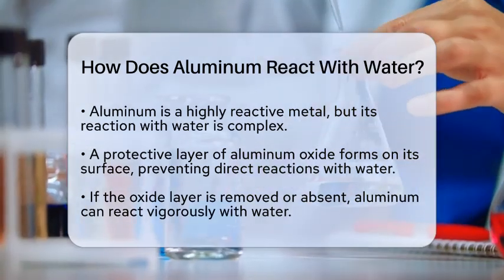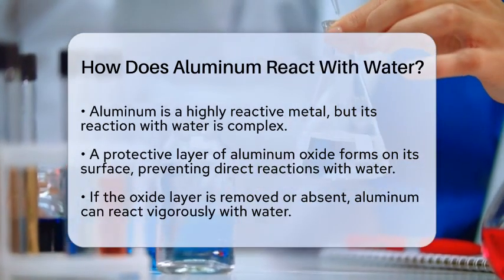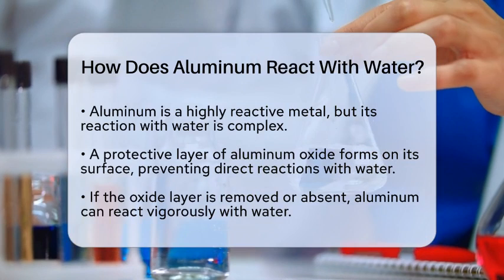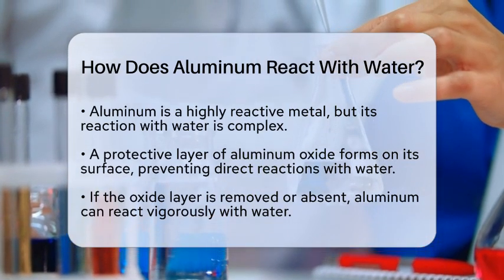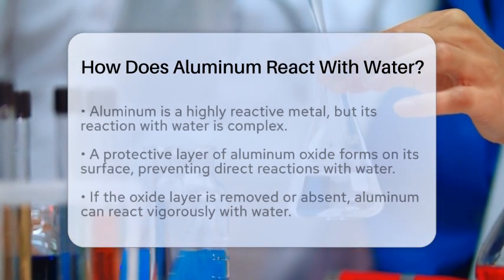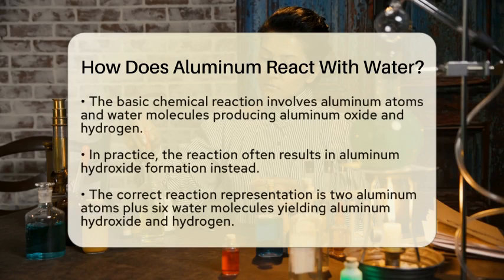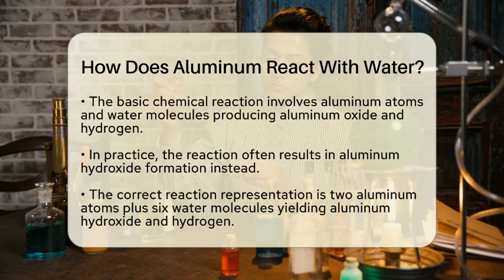However, if this oxide layer is removed or does not form, aluminum can react quite vigorously with water. The chemical reaction can be represented by the equation: two aluminum atoms plus three water molecules produce aluminum oxide and three hydrogen molecules.